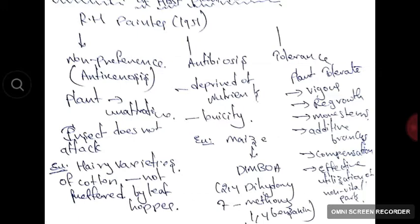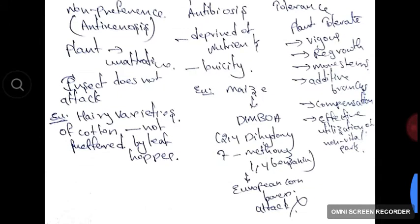In antibiosis, the plant deprives insects of nutrients or produces toxic chemicals. For example, DIMBOA (2,4-dihydroxy-7-methoxy-1,4-benzoxazine) in maize prevents the infestation of the European corn borer.